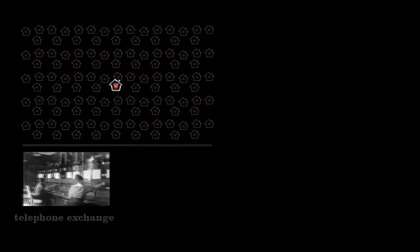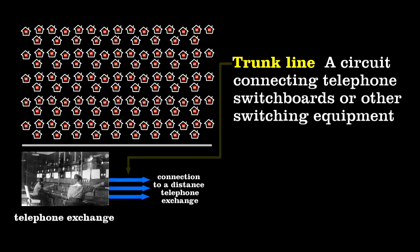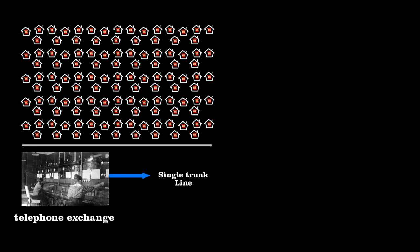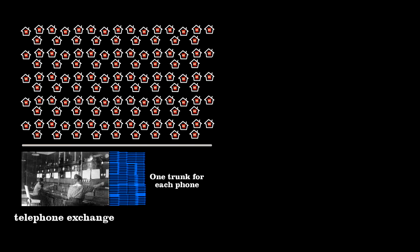...asked the question how many trunk or main telephone lines are needed to adequately service a town. You could put in just one—that would mean huge delays because of blocked calls. You could install one for each phone—that's expensive and wasteful since not everyone calls at once. The telephone company needed a trade-off between these two extremes.